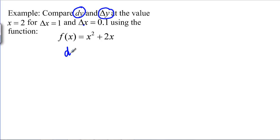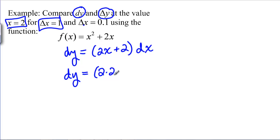We know that we can find dy by taking the derivative which is 2x plus 2 and multiplying it by dx. Now, plugging in the numbers that we have for our particular situation dy is x is 2, change in x is 1. We get 2 times 2 plus 2 times dx is the same as change in x so that will be 1. This is 4 plus 2, 6 times 1 is 6.